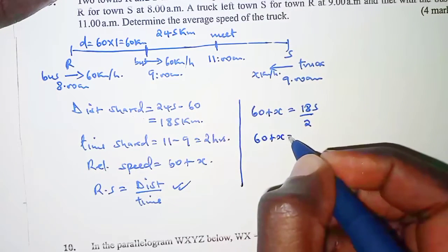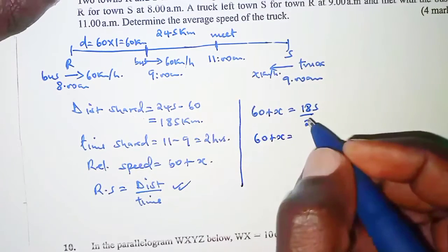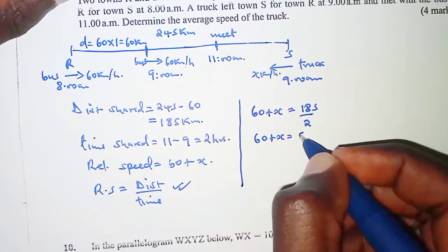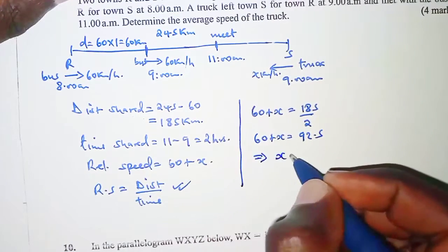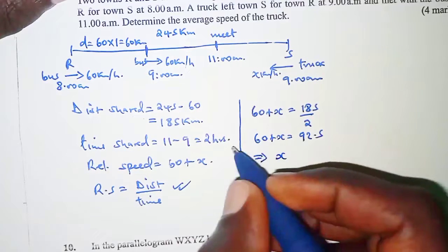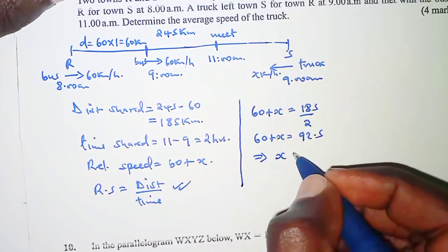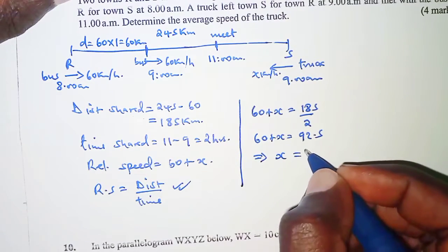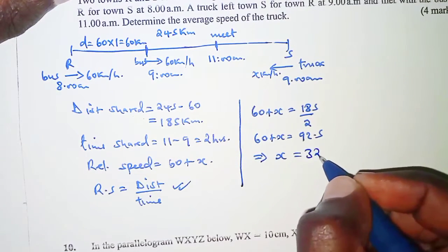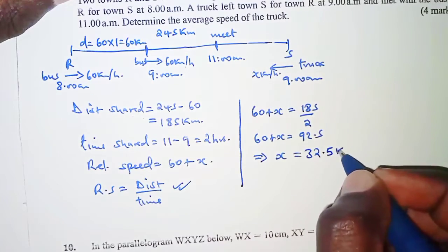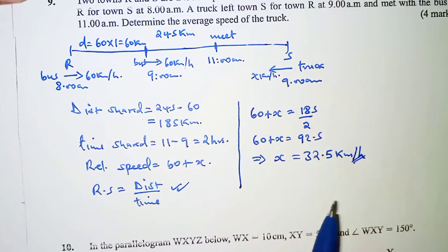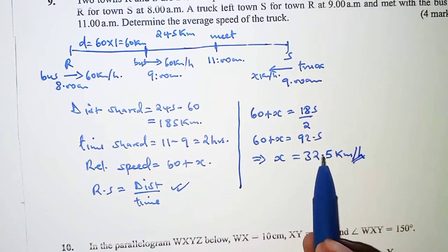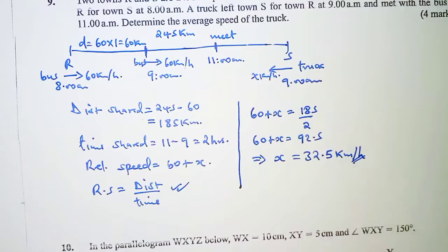So 60 + x = 92.5. Subtracting 60 from both sides gives x = 32.5 kilometers per hour. That is the average speed of the truck.